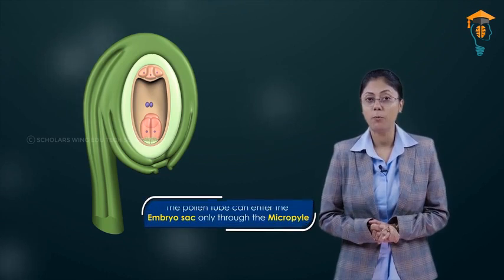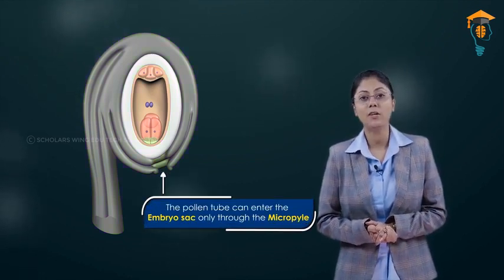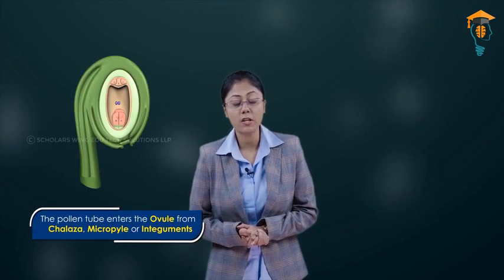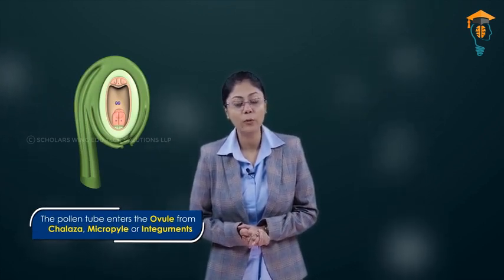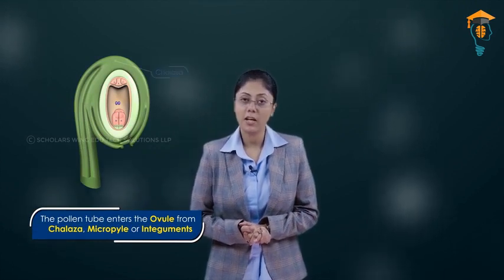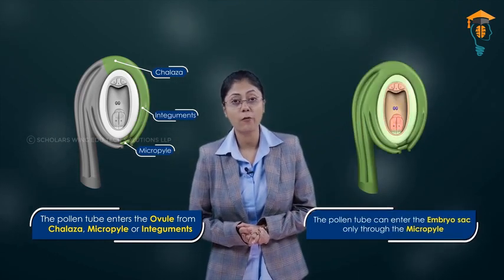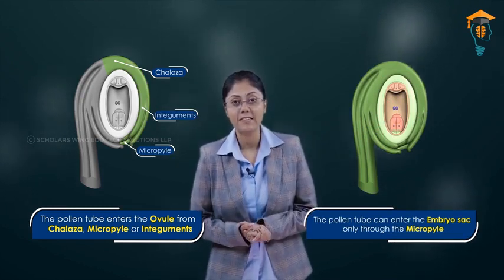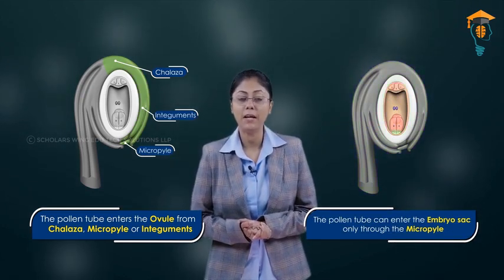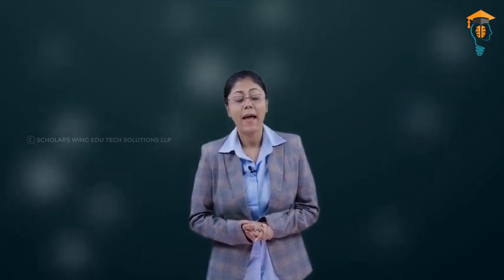However, the pollen tube can enter the embryo sac only through the micropylous side. So if the question asks from which position the pollen tube enters the ovule, your answer can be chalaza, micropyle, or integument. But if the question asks from where the pollen tube enters the embryo sac, your answer should be the micropylous side.